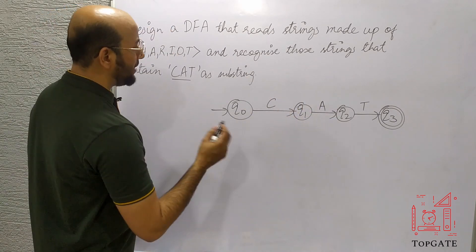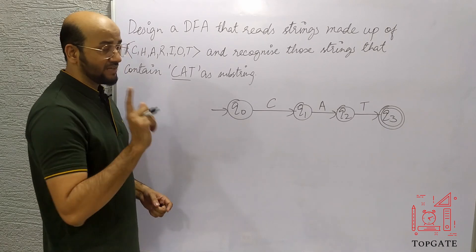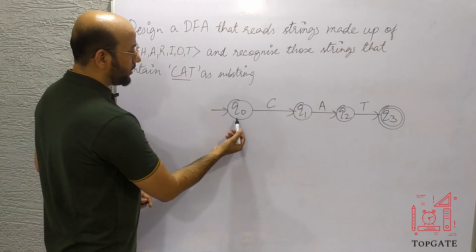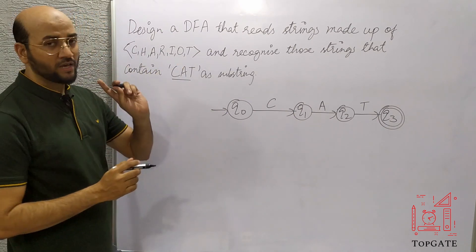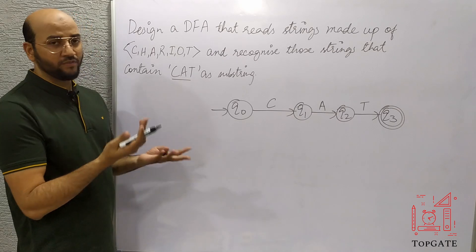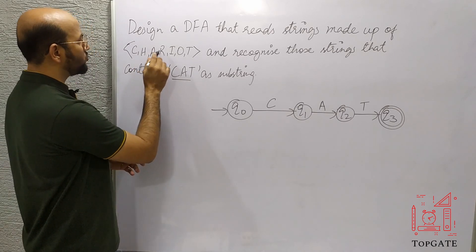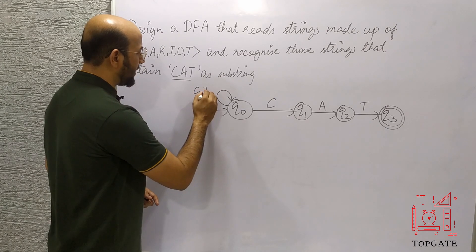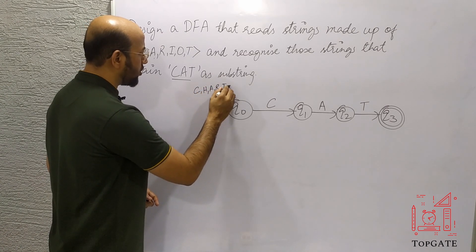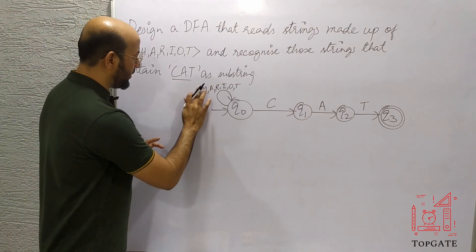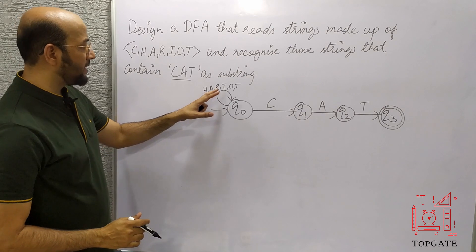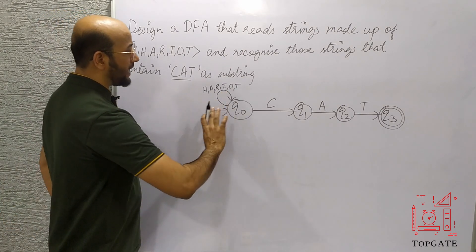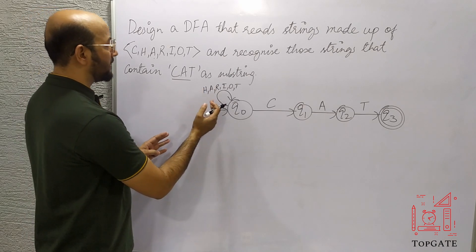To complete this DFA, every state needs exactly seven paths. At Q0, one path goes to Q1 with C. For the remaining six paths — H, A, R, I, O, T — I can have anything before 'cat', so I'll simply add a self-loop on Q0 with H, A, R, I, O, T. Q0 is now complete. With this, I can accept any string where 'cat' appears at the end and anything comes before it.